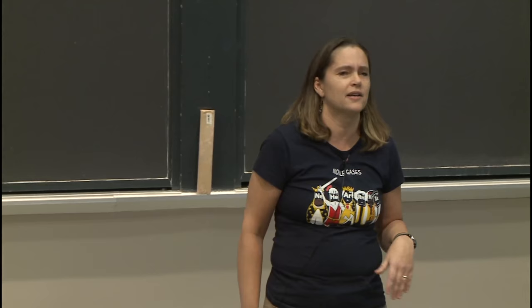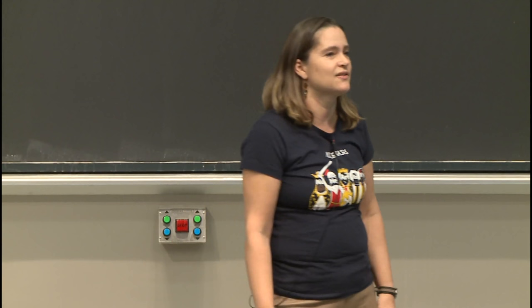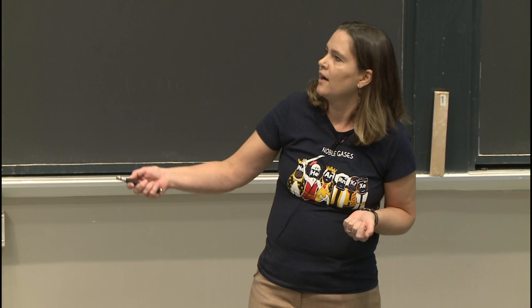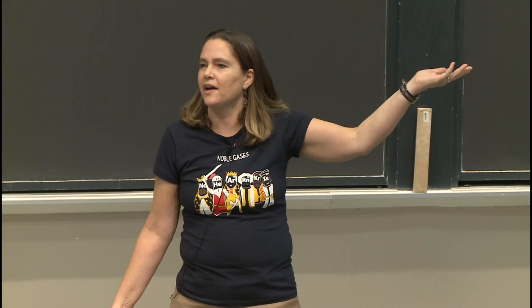Do you put up warning signs for people 100,000 years from now saying don't go in here — the half-life of the things stored here is 100,000 years, so this is still very radioactive? And if you write this sign, what language do you put it in? The documentary pointed out that Neanderthals existed about 40,000 years ago, so what will be going on 100,000 years from now, and how do you write a sign to people that far in the future?